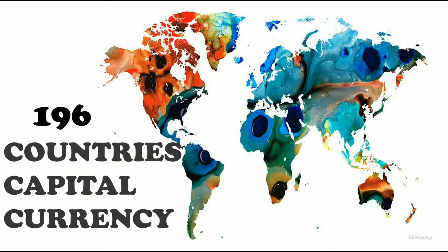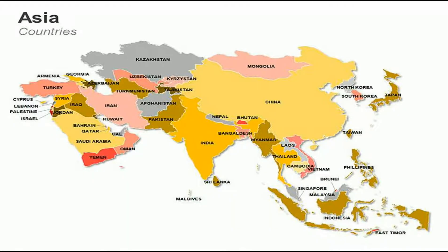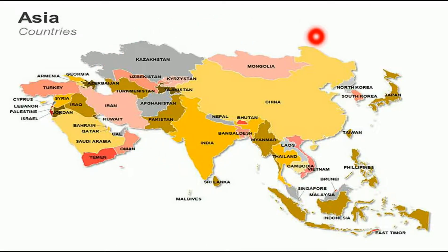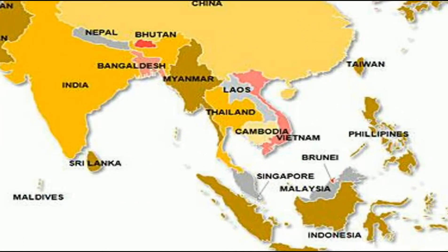So here we are dealing with 196 countries with their capital, the currency, the location, their map and their flag. In the last two lessons I have already covered the previous parts, and today I am going to deal with the lower part of Asia which is known as South Asia.